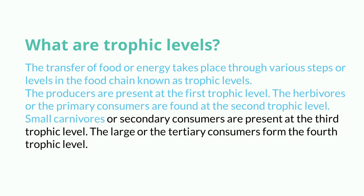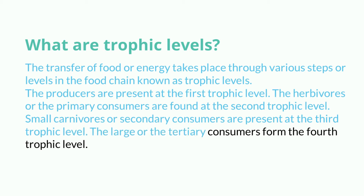Small carnivores, or secondary consumers, are present at the third trophic level. The large, or tertiary consumers, form the fourth trophic level.